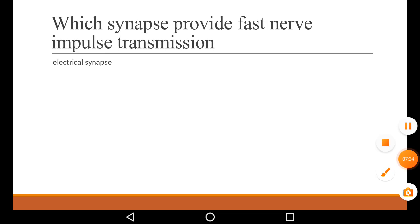Which synapse provides fast nerve impulse transmission? We have seen two synapses — chemical as well as electrical. Among them, electrical synapse always provides fast impulse transmission. Electrical synapse is very fast with a quick response. But for chemical transmission, neurotransmitters bind with neuroreceptors, and then the next neuron gets excited — but the passing procedure is very slow compared to electrical synapse.